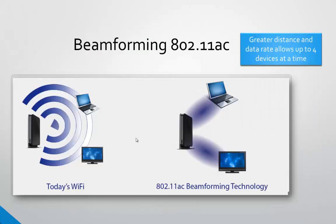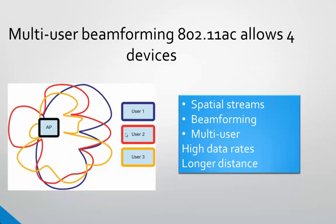In the 802.11ac standard, we're going to be able to beamform up to four devices at the same time. This is going to be radically better, especially in a home where you have devices further away from the access point yet still getting very strong signal and high data rate — up to four devices in the house. So 802.11ac provides up to four users that can use beamforming simultaneously.